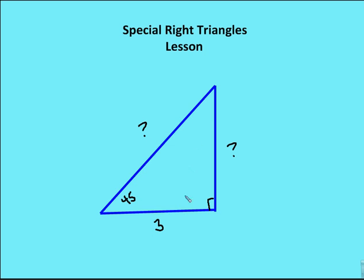A 45-45-90 triangle: I have a leg of 3. Of course, the other leg is going to be 3 as well since it's an isosceles triangle, and then the hypotenuse will be 3-root 2. The hypotenuse is the length of the side opposite the 45-degree angle multiplied by root 2.